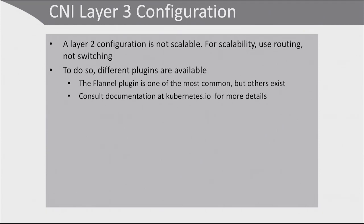Layer 3 networking is significantly more complicated. You would need it because layer 2 configuration is not scalable. With routing, pods and nodes communicate directly using direct IP addresses — you cannot use NAT, but there is no restriction against routing. That's exactly what CNI layer 3 is about. Different plugins are available; the Flannel plugin is one of the most common, but others exist as well. I would advise you to consult the documentation at kubernetes.io for more details.